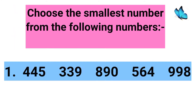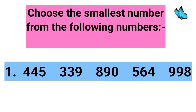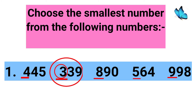Now in the next question, children, you have to choose the smallest number from the given numbers. Again here is a list of numbers and you have to look at the first digit of the numbers. The first digits are 4, 3, 8, 5 and 9. From all these underlined digits you have to find out which digit is the smallest. The smallest digit is 3, so the smallest number will be 339.